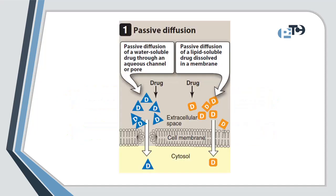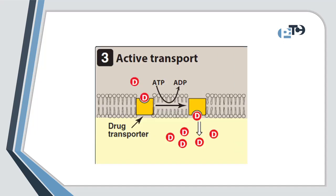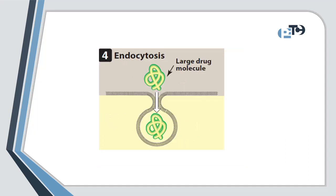Passive diffusion is the most common mechanism, where the drug moves across cell membranes from an area of higher concentration to one of lower concentration. Facilitated diffusion involves carrier proteins that help transport drugs across the membrane without consuming energy. Active transport requires energy to move drugs against a concentration gradient, often involving specific carrier proteins. Endocytosis is the process by which a cell engulfs substances, including drugs, in vesicles to bring them into the cell.